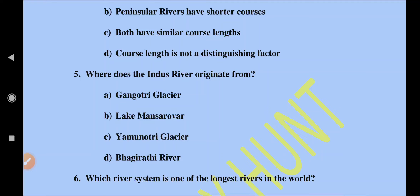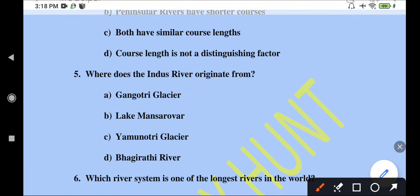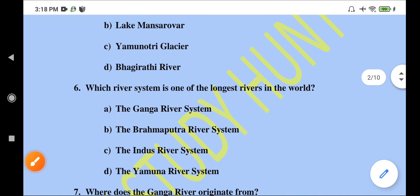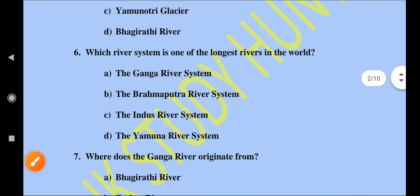Where does the Indus River originate from? The Indus River originates from the Tibetan Plateau. There is a lake on the Tibetan Plateau called Lake Mansarovar, which is located in Tibet. So we can go with option B.